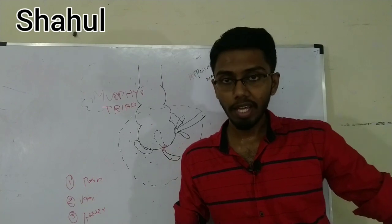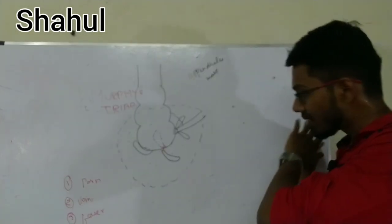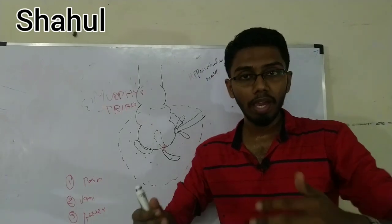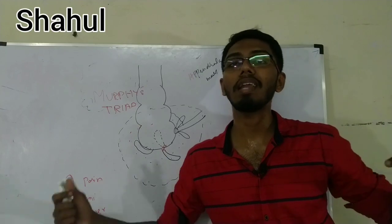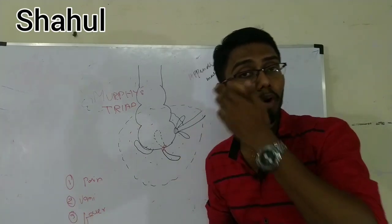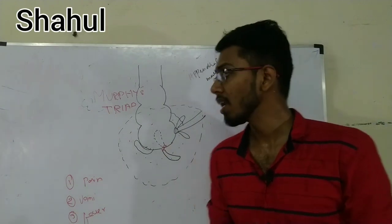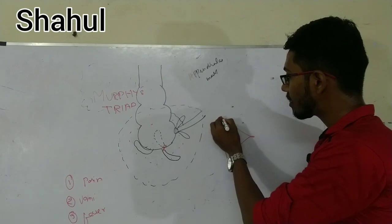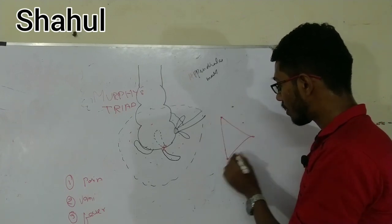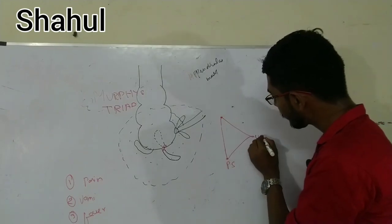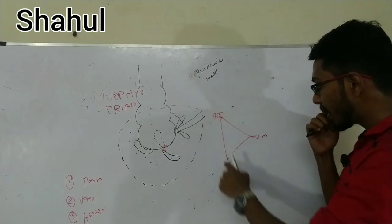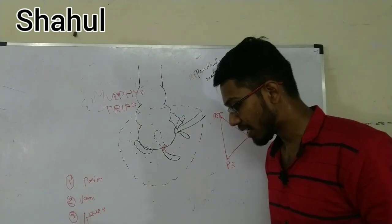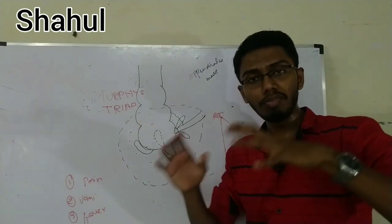Specific signs for appendicitis: Rovsing's sign — when we apply pressure on the left iliac fossa, the patient has tenderness on the right iliac fossa, because the pressure pushes intestinal contents to the right. McBurney's point is the junction of the medial two-thirds and lateral one-third of an imaginary line drawn between the anterior superior iliac spine and the umbilicus. McBurney's tenderness is also an important finding.